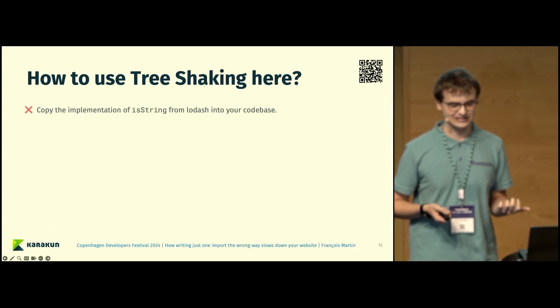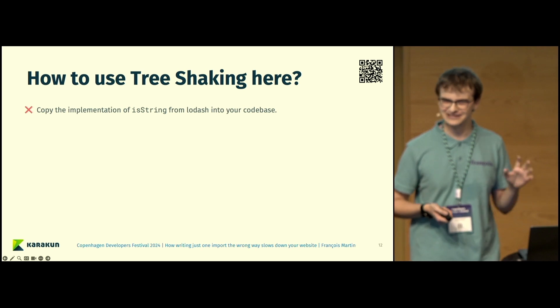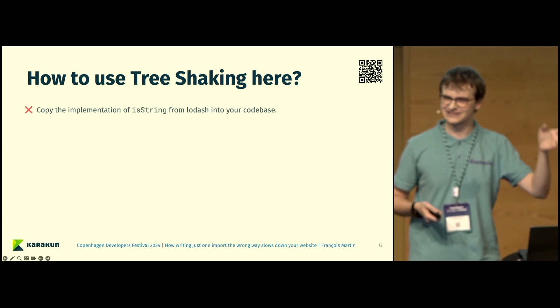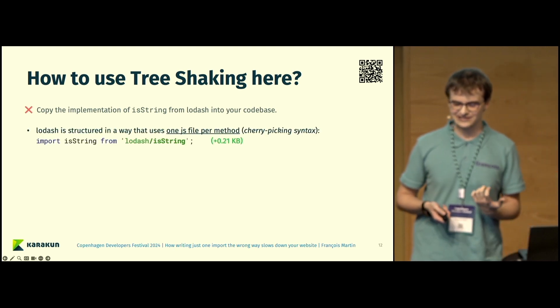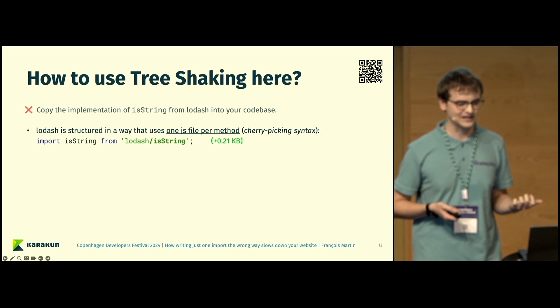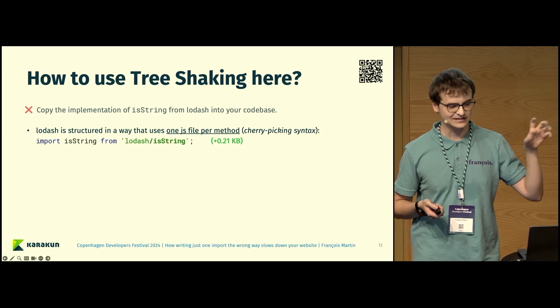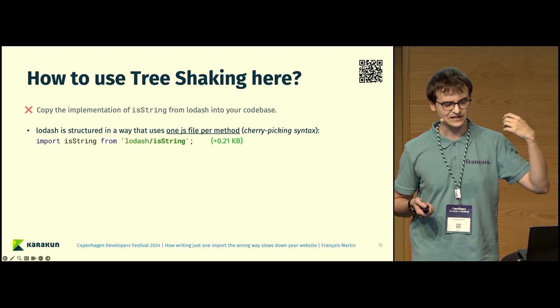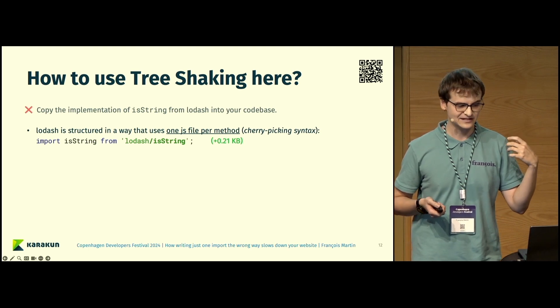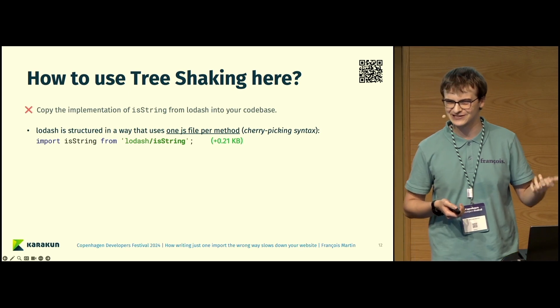How can we actually make use of tree-shaking here? There are a few ways. Copying the implementation of isString from Lodash into your code base is not one of them. Believe me, I experienced this, and by the laughter in the audience, I see some of you also did that. Lodash is actually structured in a way that there is one JS file per method. Then you can use a so-called cherry-picking syntax. You can see by writing, for example, import isString from Lodash slash isString. By this, we import the specific isString JavaScript file. You can see this only has an impact of 0.21 kilobytes on the bundle size, which is much nicer than 24 kilobytes.